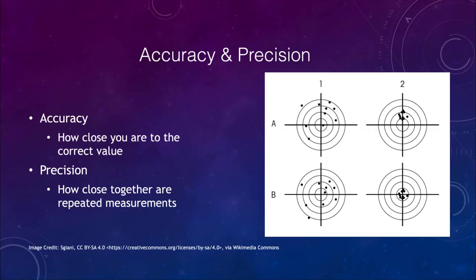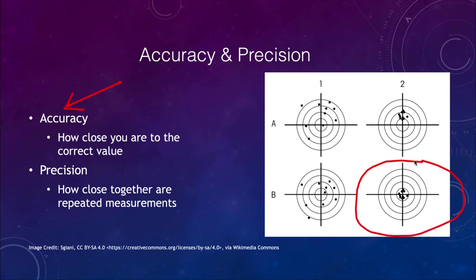The first thing I want to look at is accuracy and precision — these mean two different things. We have an example with some targets. Accuracy is how close you are to the correct value, so accurate means you are close to the center of the target. You can see that this one here would be relatively accurate, and actually two are relatively accurate.